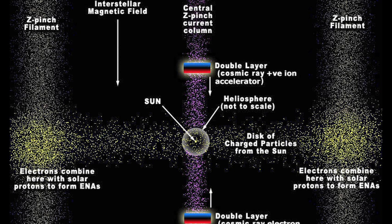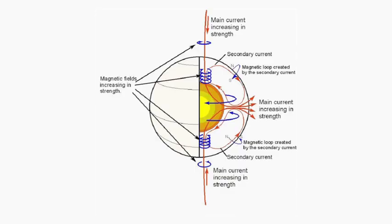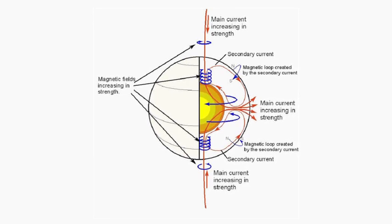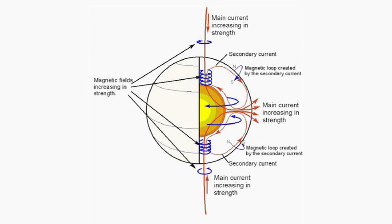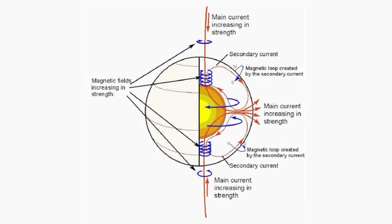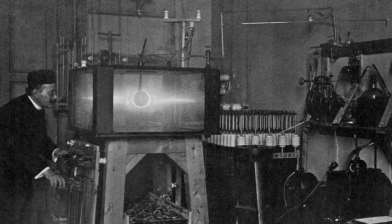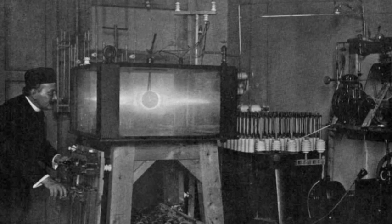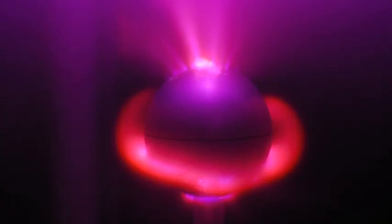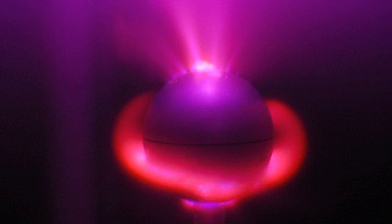The Electric Universe model of the Sun has been developed over many years. Essentially, what we are living in is something very analogous to a plasma discharge that has been done in plasma laboratories for the better part of a century, with an anode at one end and a cathode at the other, and you have certain plasma structures in there like the anode glow and the corona. And that's exactly what we're seeing.